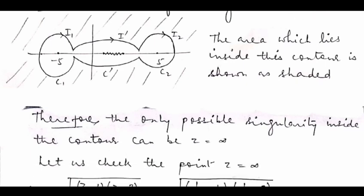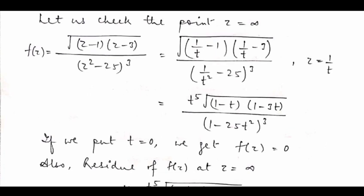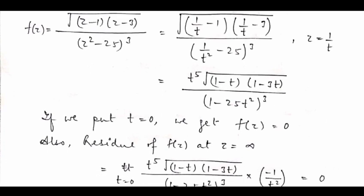To check the singularity at z equals infinity, we substitute z equals 1 over t — the usual procedure — then rearrange the numerator and denominator and put t equals 0. When we do that, we find that at t equals 0, f(z) is actually 0. This simply means f(z) does not blow up, and therefore z equals infinity is not a singularity of f(z).